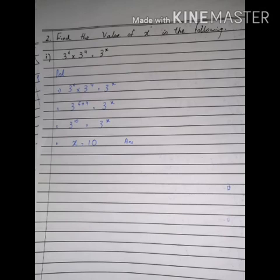Part number 1 is 3 to power 6 multiplied by 3 to power 4 is equal to 3 to power x. First, the base is same on the left side. We will add the exponents, so 3 to power 6 plus 4. So we will have 3 to power 10 on the left side.